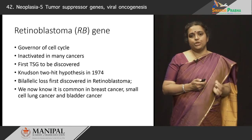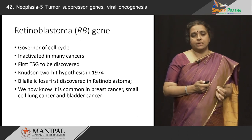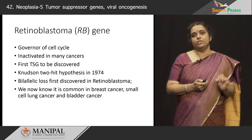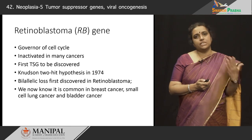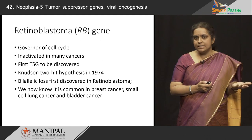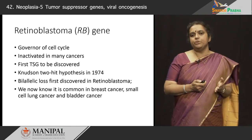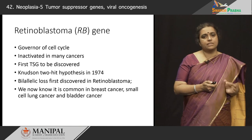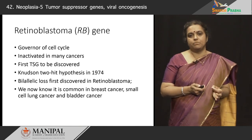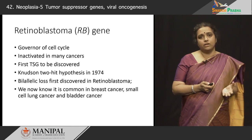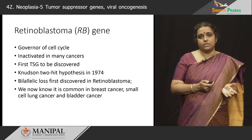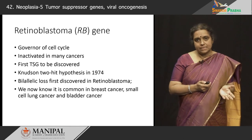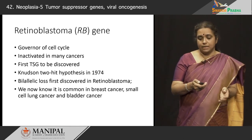There is the very famous two-hit hypothesis by scientist Knudson, who proposed this in 1974. What he said was, when both alleles of the retinoblastoma gene are mutated, the disease develops — this is known as the two-hit hypothesis. Biallelic loss was first discovered in retinoblastoma and that is why it is called the RB gene. Mutations of the RB gene are also seen in breast cancer, small cell lung cancer, and bladder cancer, among other cancers.